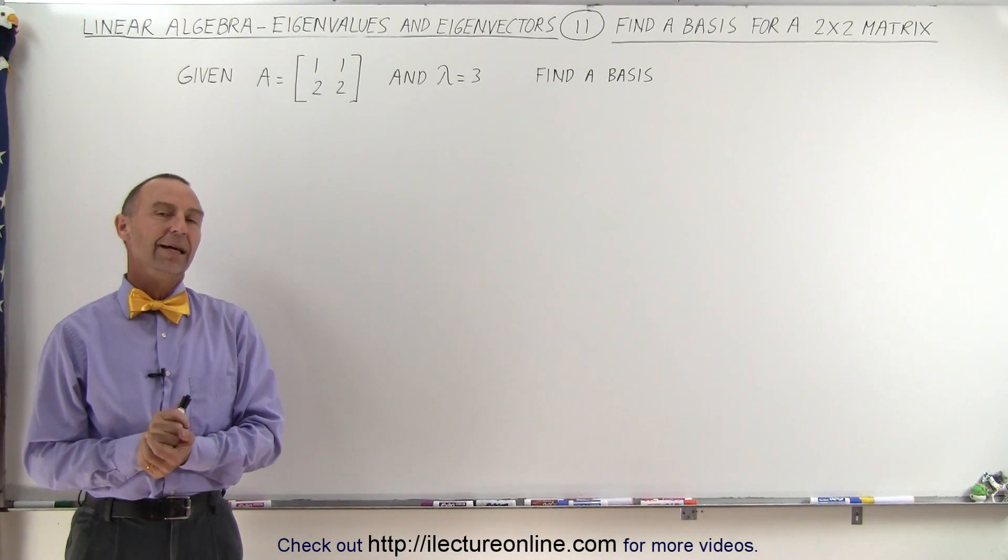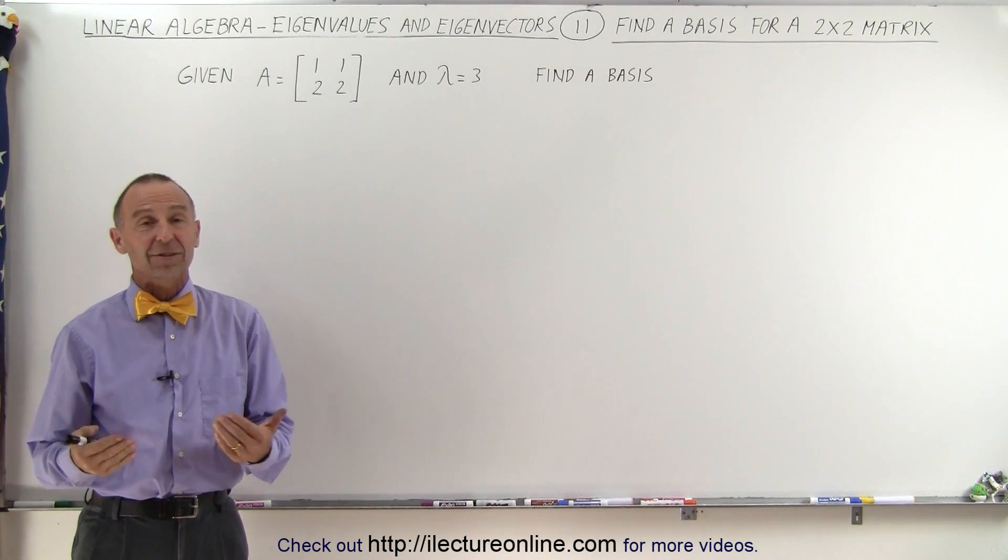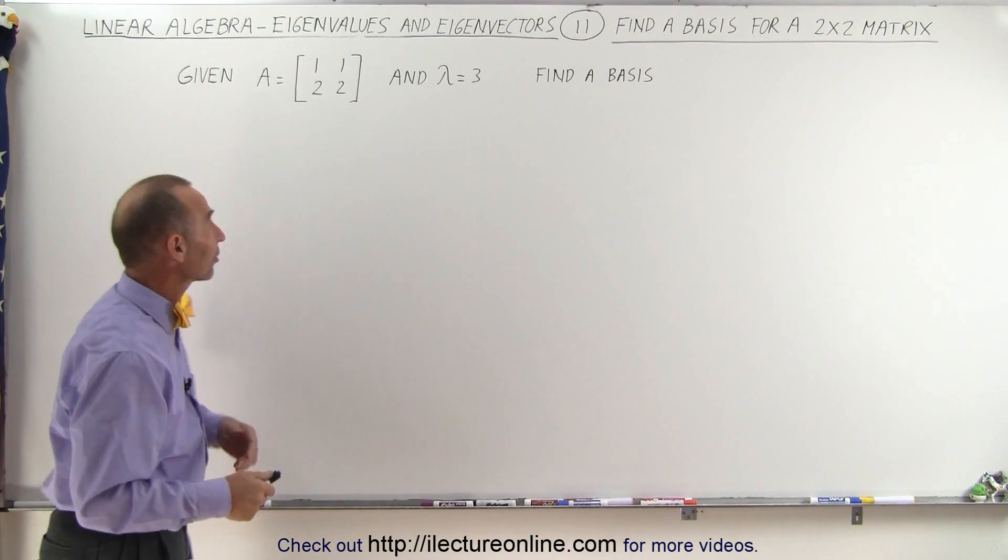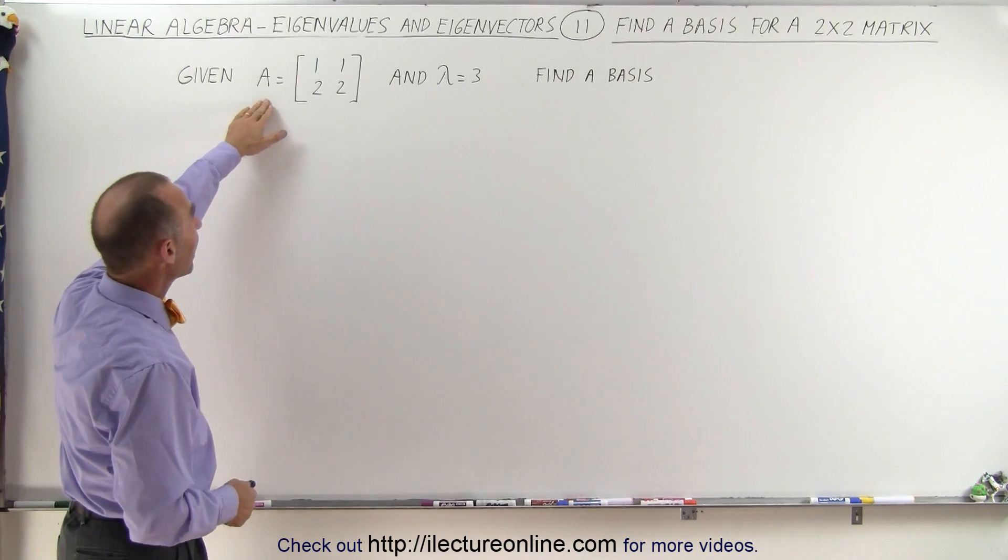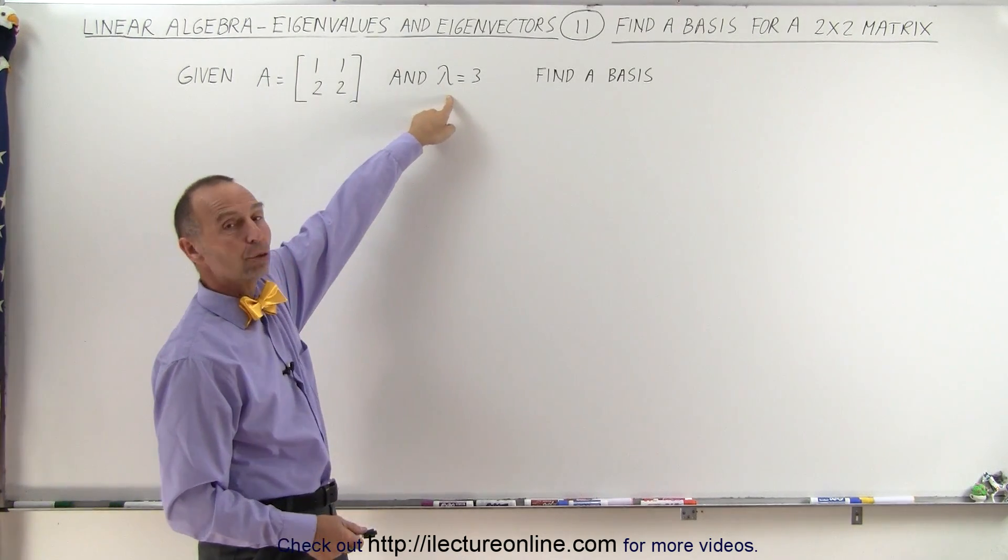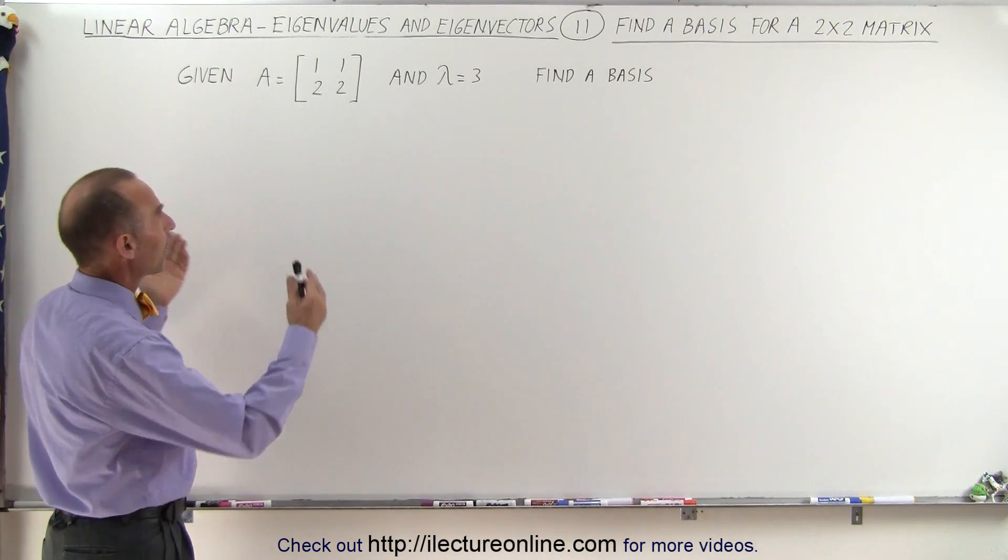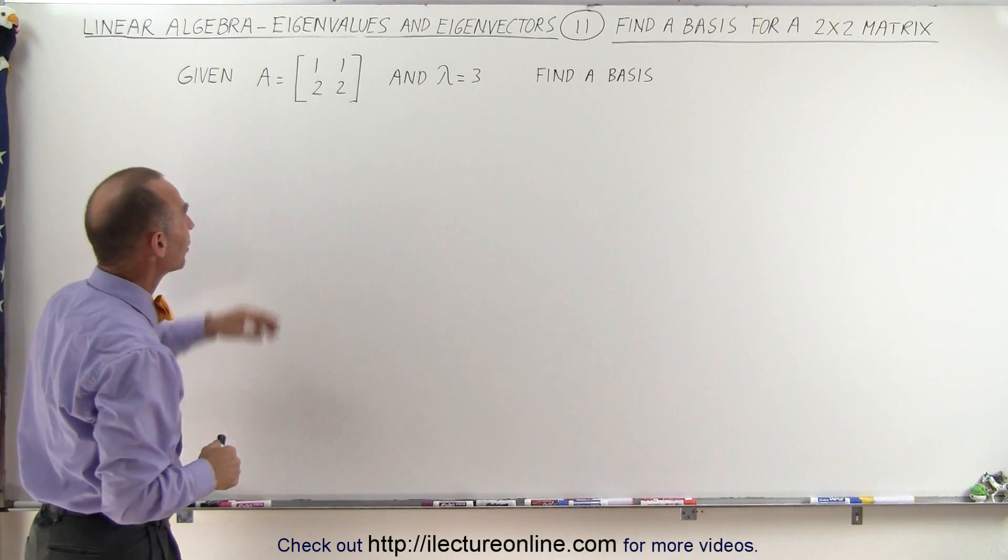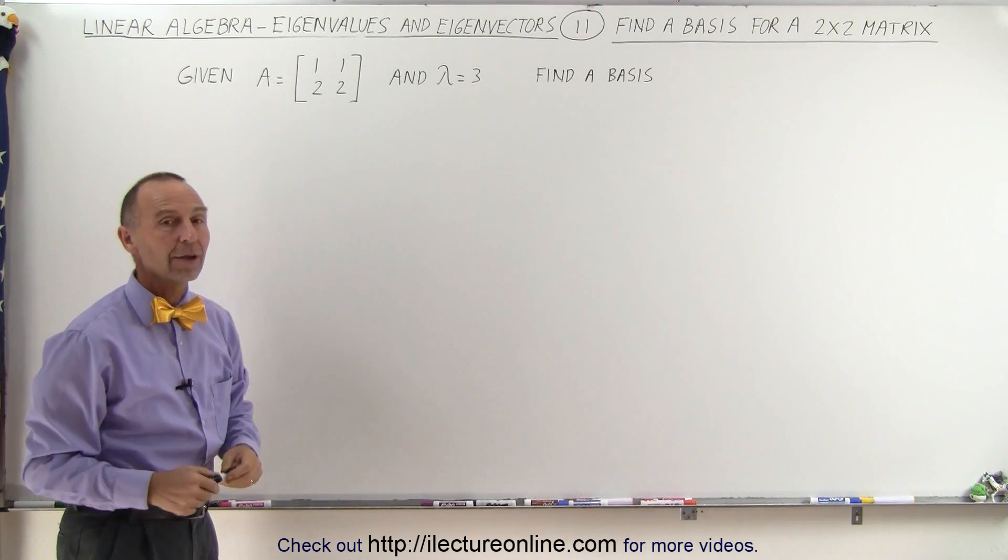Welcome to ElectronLine. Now let's see if we can find the basis of this 2x2 matrix. It's defined here A, and we're also given one of the two eigenvalues of this matrix. So based upon that associated with that eigenvalue in this matrix, let's find a basis.